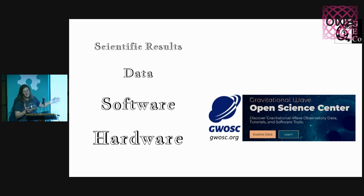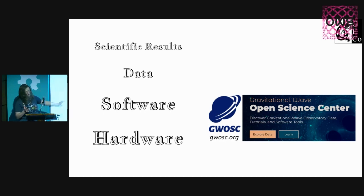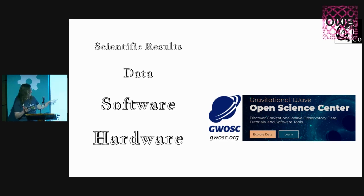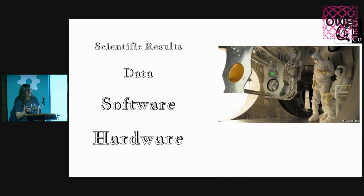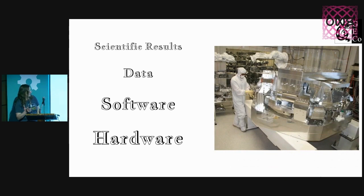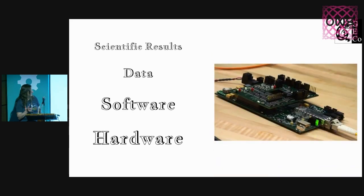On the hardware side — while we always put science first — it's really based on the foundation of hardware. All our amazing discoveries wouldn't exist without it. The hardware includes optics, vacuum chambers, seismic isolation platforms, and timing boards like the ones we have at Columbia. There are hundreds of these components.